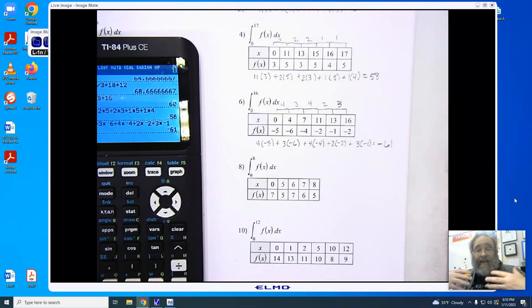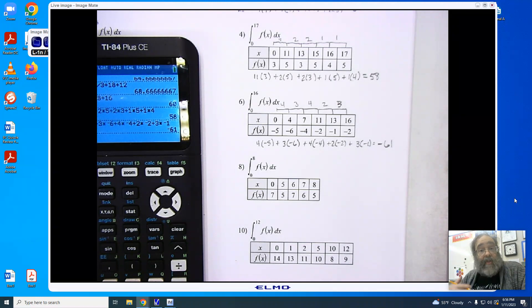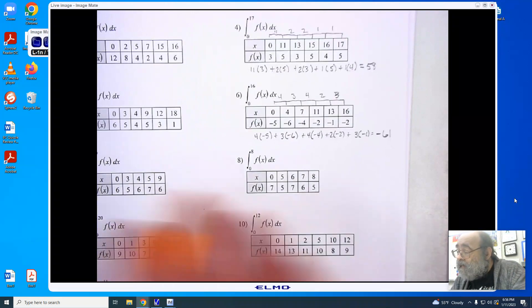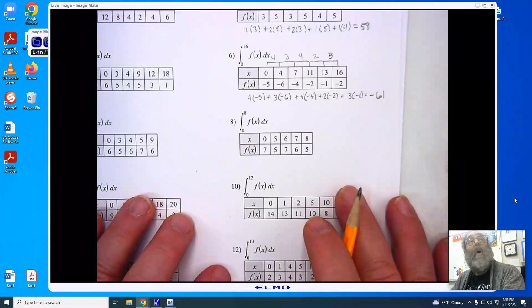Now remember, the integration is merely a change in value. And a value can change either positively or negatively. So it is entirely reasonable for us to get a Riemann sum that is a negative value. Here we go. Number 8.